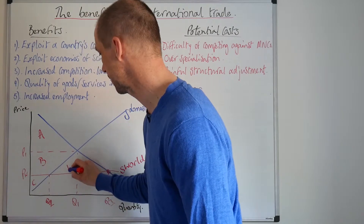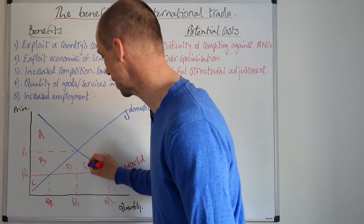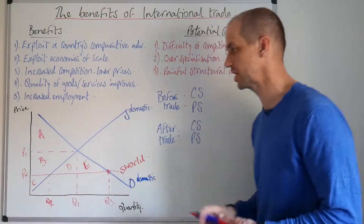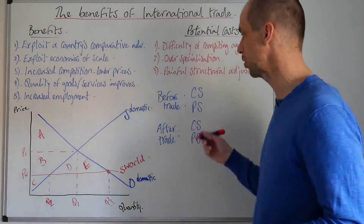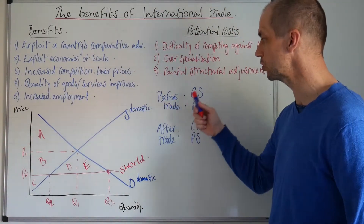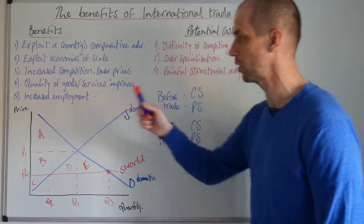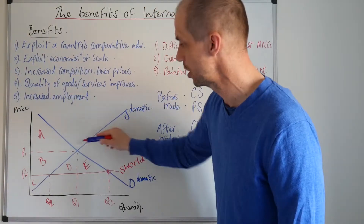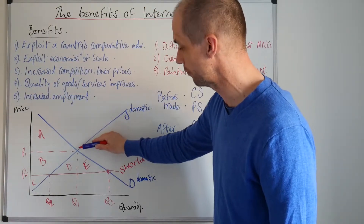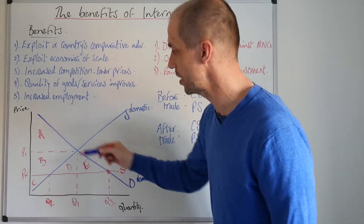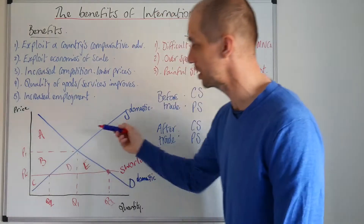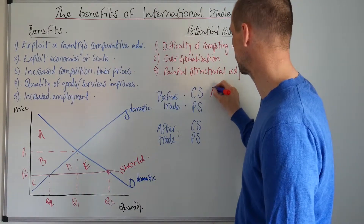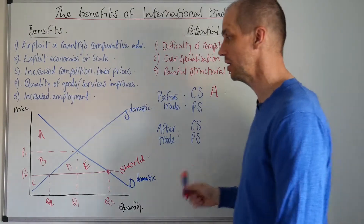We can label each of the separate areas: A, B, C, D and E. This gives us a really nice representation of what's taking place. Before trade, the consumer surplus was area A, while producer surplus was B and C. After trade takes place, we've got that enormous increase in consumer surplus — it now extends to A, B, D and E — while the producer surplus for domestic producers is just area C.